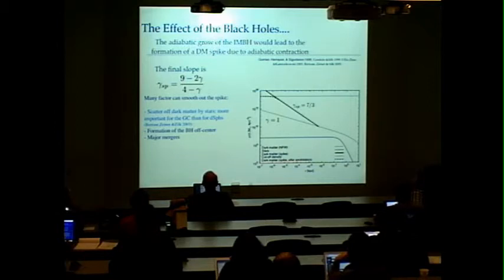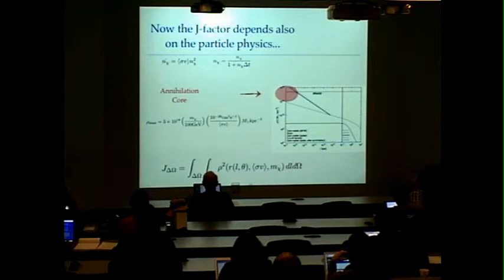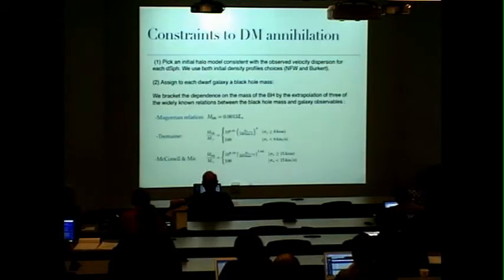So now the astrophysical factor will be calculated by integrating this density profile, but this one is truncated to a maximum scale that is set by the annihilation cross-section of the dark matter and the mass of the particle. This is basically set by the evolution of the density of the dark matter particles. And so to now calculate what would be the constraints on dark matter annihilation we have to assign a mass of the black hole to each of the dwarfs and to do so we have used three of the known relations.